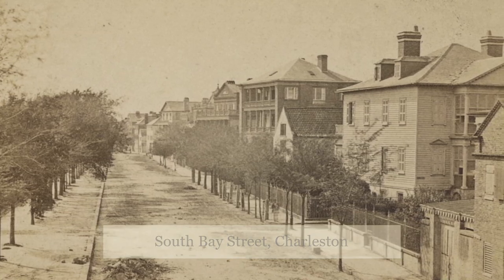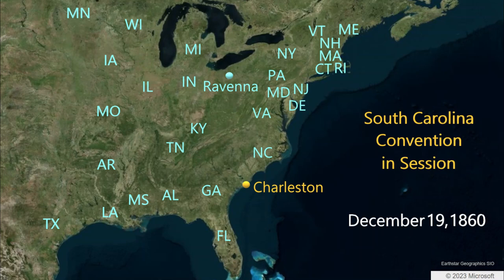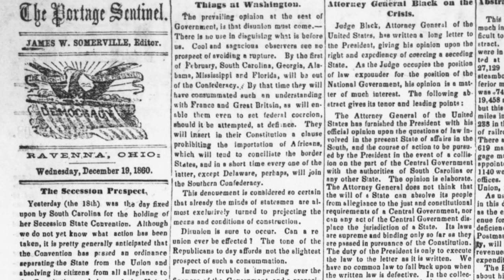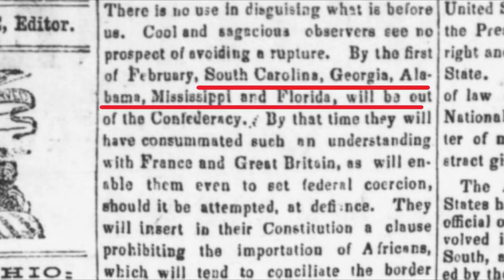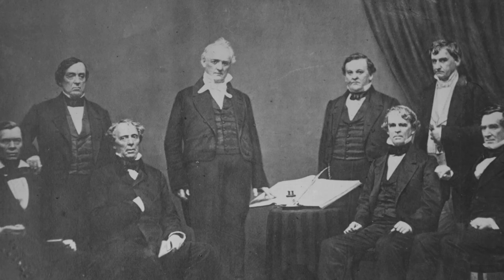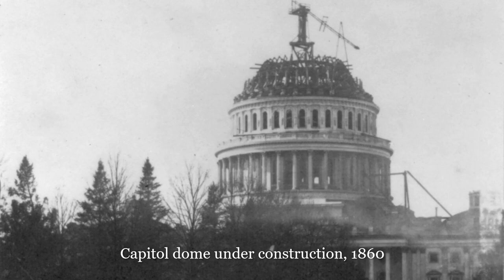On December 19th, up north in Ravenna, Ohio, the Portage Sentinel predicts what is unfolding, stating: 'There is no use in disguising what is before us. Cool and sagacious observers see no prospect of avoiding a rupture. By the 1st of February, South Carolina, Georgia, Alabama, Mississippi, and Florida will be out.' At this time, President James Buchanan presents essentially a disassociated response to the crisis. Buchanan personally wants the union to remain together, but does not believe his office has any power to avoid a separation — the United States will continue to collect revenues from South Carolina, but the government has no power to coerce a seceding state back into the union.